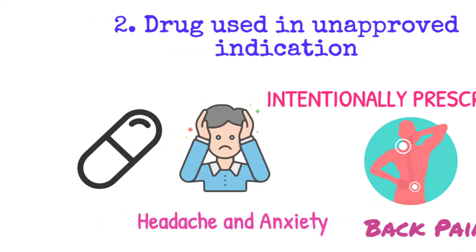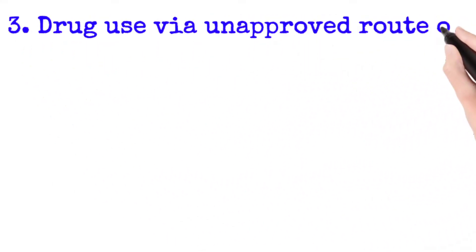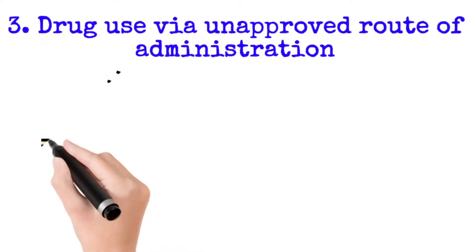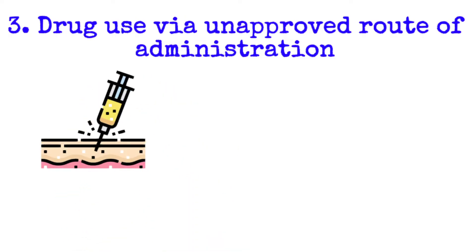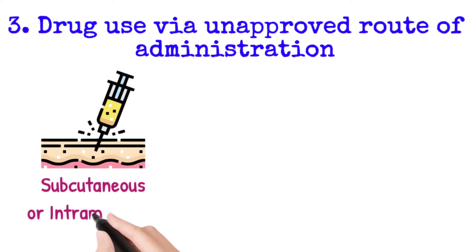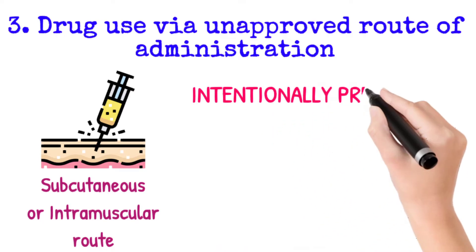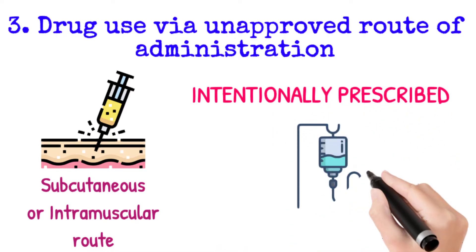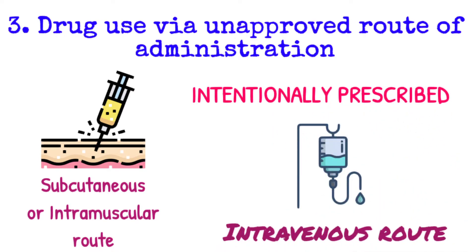The next scenario is drug use via unapproved route of administration. For example, any drug approved to be administered to a patient via subcutaneous or intramuscular route of administration, however, the doctor intentionally prescribed that drug to be administered via intravenous route of administration. This is called drug use via unapproved route of administration, and this scenario is treated as off-label use.